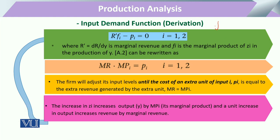Specifically, fi shows the change in output y due to a change in the utilization of labor, or equally the change in output with respect to a change in capital. In other words, fi is the marginal physical productivity of labor or the marginal physical productivity of capital. In output maximization through the Lagrange method, we calculate these marginal physical productivities.